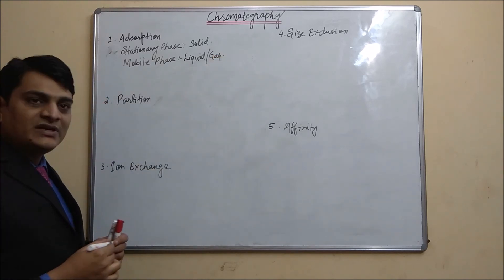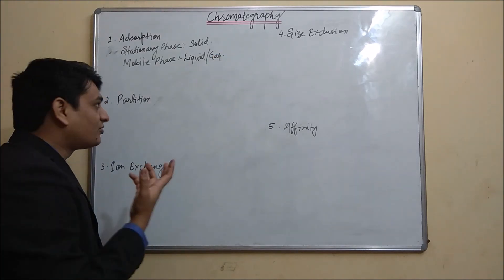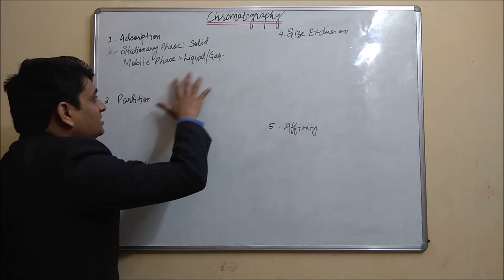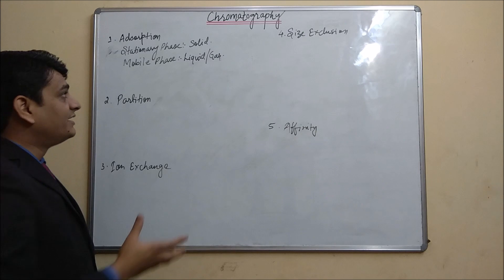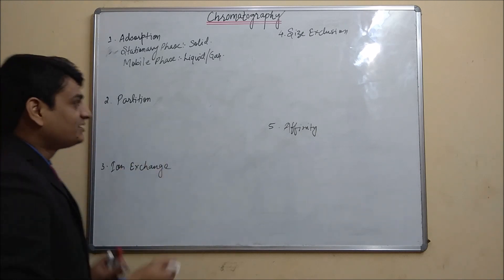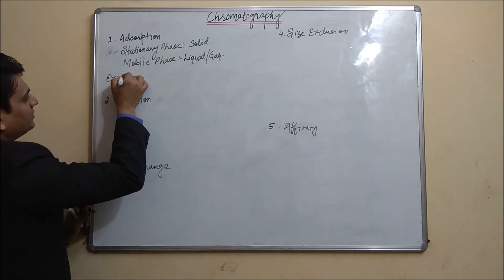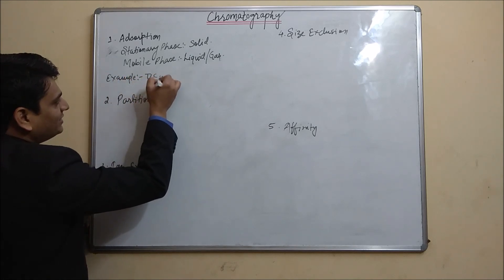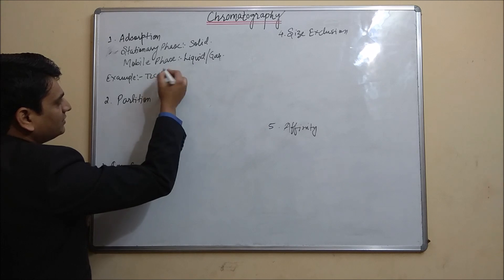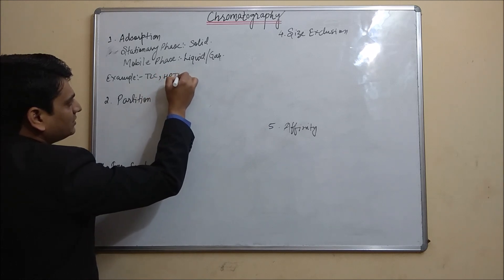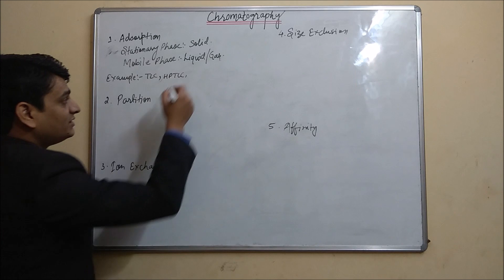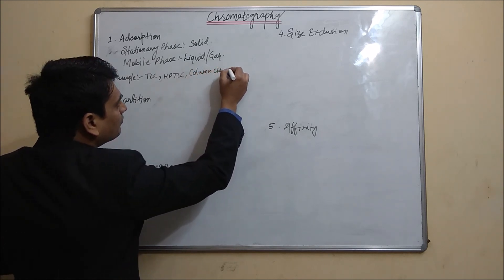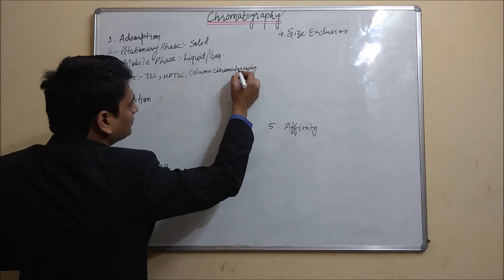The liquid or gas will adsorb on the surface of the solid stationary phase — this is the basic phenomena involved in adsorption chromatography. Examples of adsorption chromatography include TLC (thin layer chromatography), HPTLC (high performance thin layer chromatography), and column chromatography.